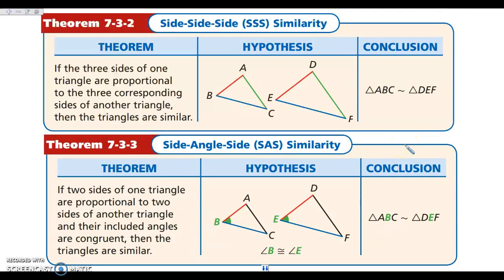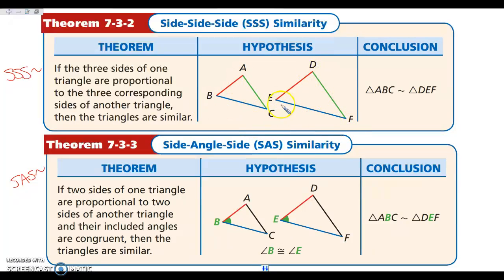The next two shortcuts are side-side-side similarity and side-angle-side similarity. If you are using side-side-side similarity, I want you to write SSS with the similarity symbol — not the congruence symbol. If you don't write the similarity symbol, I'm going to assume you're talking about congruence, and they are different. With side-side-side congruence, three pairs of sides were congruent. With side-side-side similarity, our three pairs of sides must be proportional: AB over ED equals AC over DF equals BC over EF. We don't need to know anything about the angles.